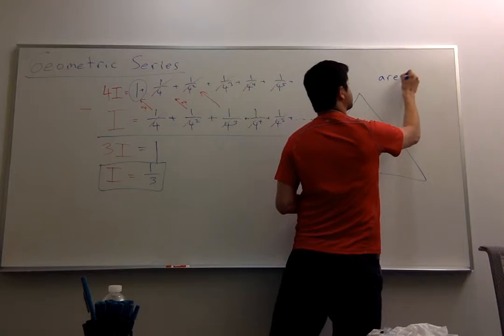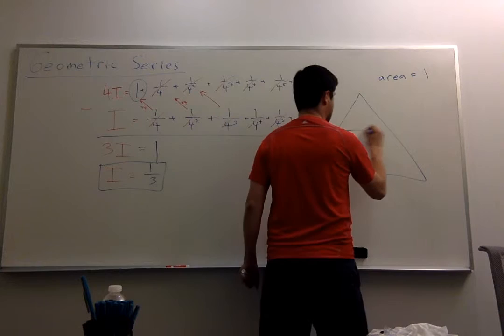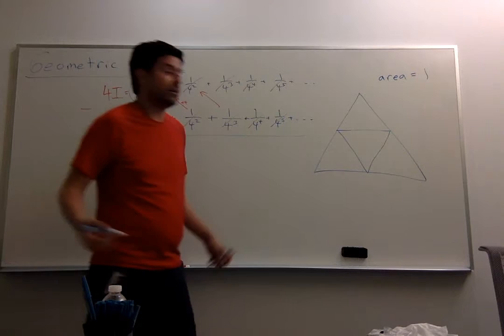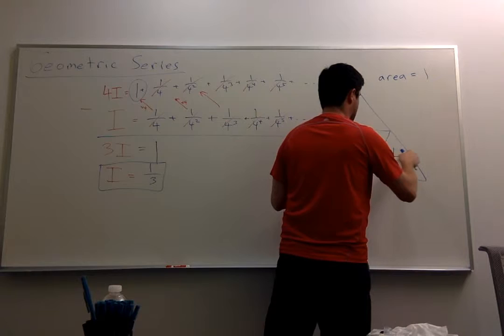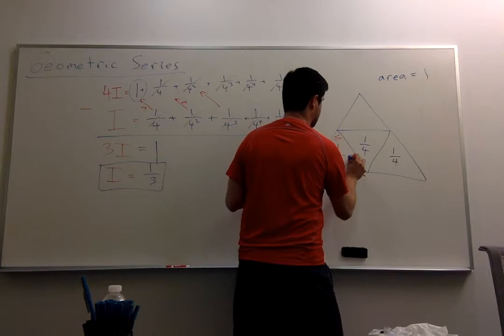I'm going to cut this triangle in 4. 1, 2, 3, and 4 pieces. So each one of them has area 1 quarter, right? So let's say 1 quarter, 1 quarter, and 1 quarter. This is the red, this is the blue, and this is the black.